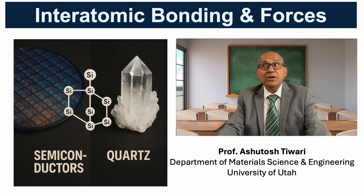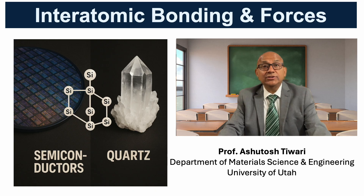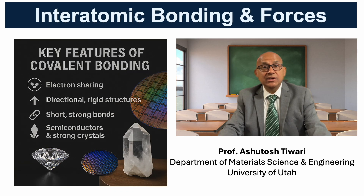Covalent bonding also plays a central role in semiconductors like silicon and germanium, which are the foundation of modern electronics. Another example is quartz, or SiO2, which forms a strong covalent network giving it high stability.